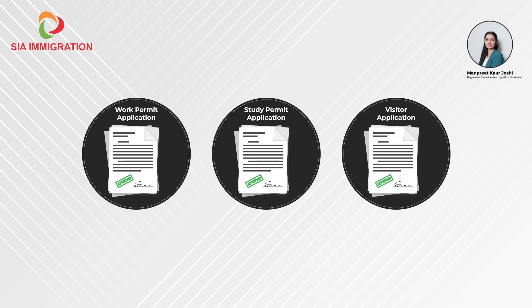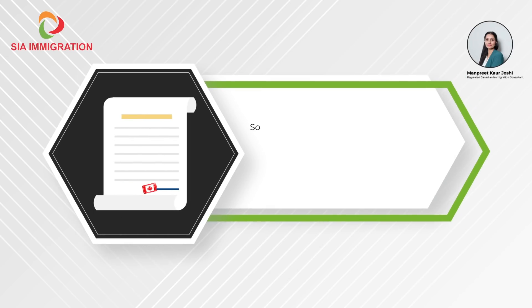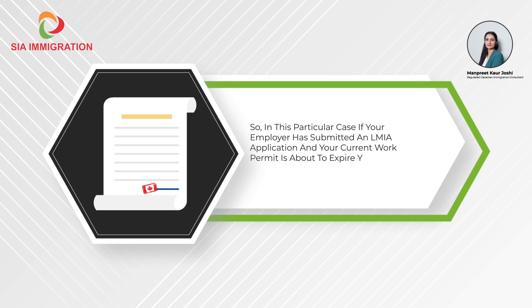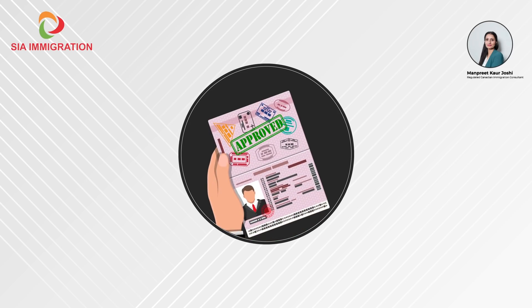Some kind of application must be submitted to Immigration, Refugees and Citizenship Canada (IRCC). So in this particular case, if your employer has submitted an LMIA application and your current work permit is about to expire, you will not automatically go on implied status until and unless you submit your work permit application to IRCC.